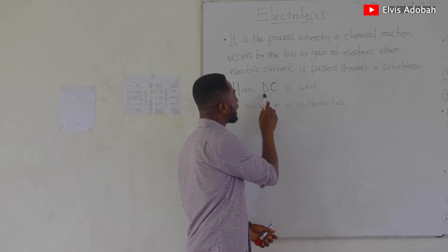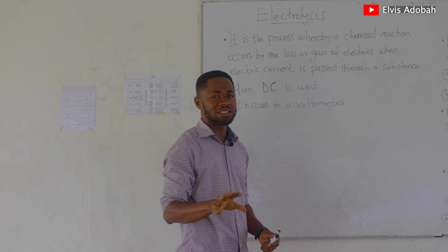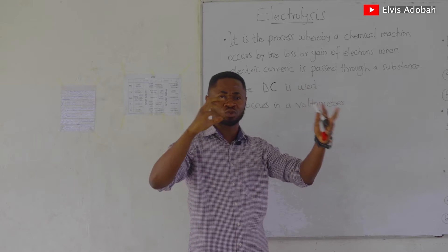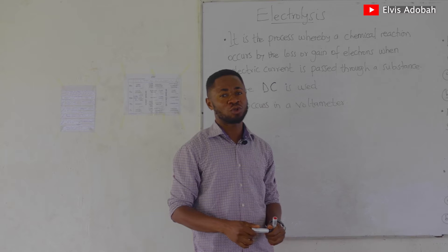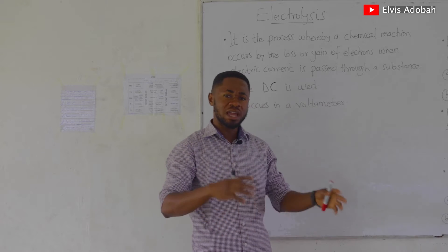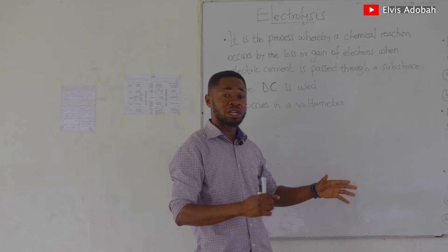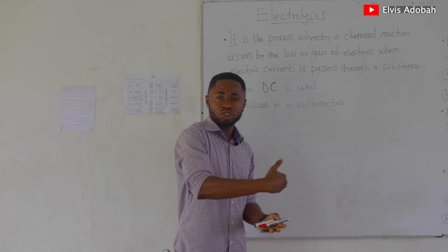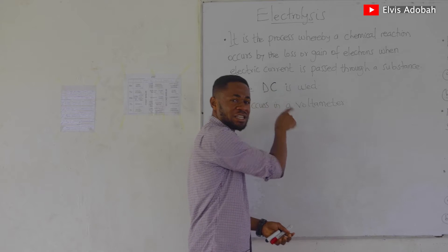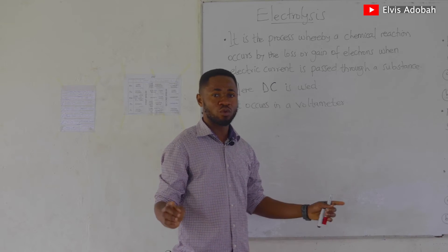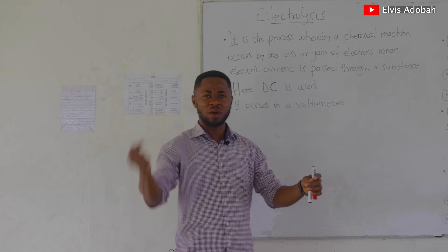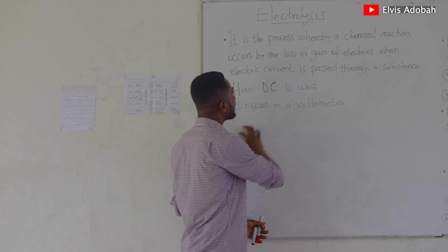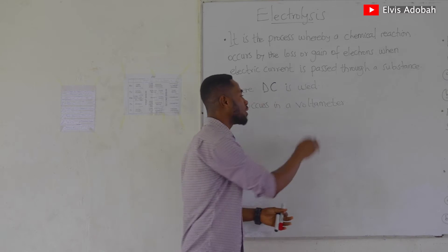The kind of electricity used in electrolysis is direct current — we don't use AC, it is truly DC. When we use AC, the positive and negative poles will keep on switching, and that is going to disturb our work. For the decomposition of the substance to occur we have to pass DC through it. If you use AC, decomposition would not occur because the poles will keep on switching. This electrolysis occurs in a device which we call a voltameter.